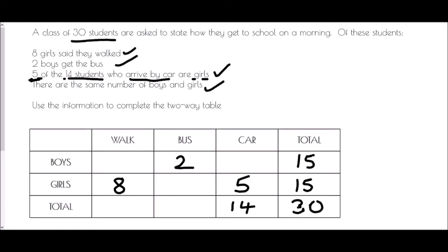If we think about the car column, we know 14 students come by car and five of them are girls, so the rest must be boys: 14 take away five is nine. If we think about the number of girls, we know that in total there are 15 girls. Eight of them walk, five of them get the car — that is 13 students altogether. The rest must take the bus: to get from 13 to 15 is two. So two girls get the bus.